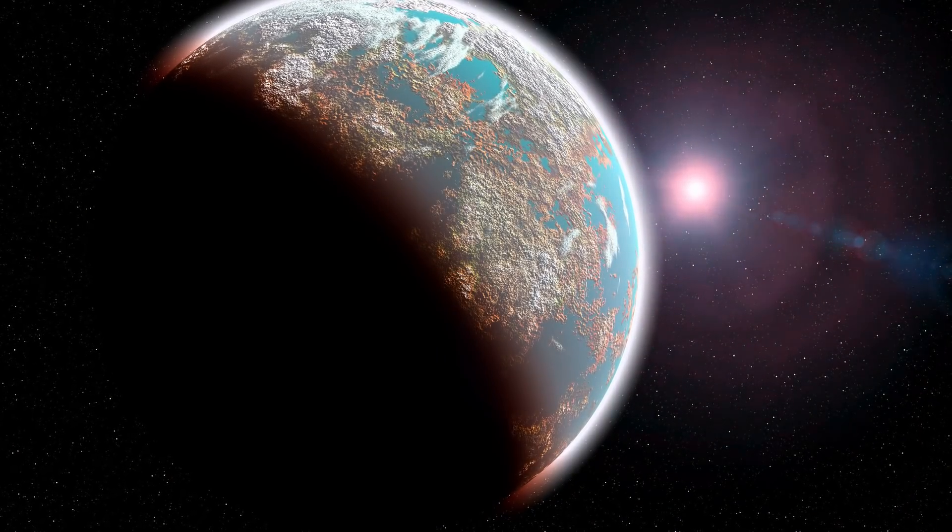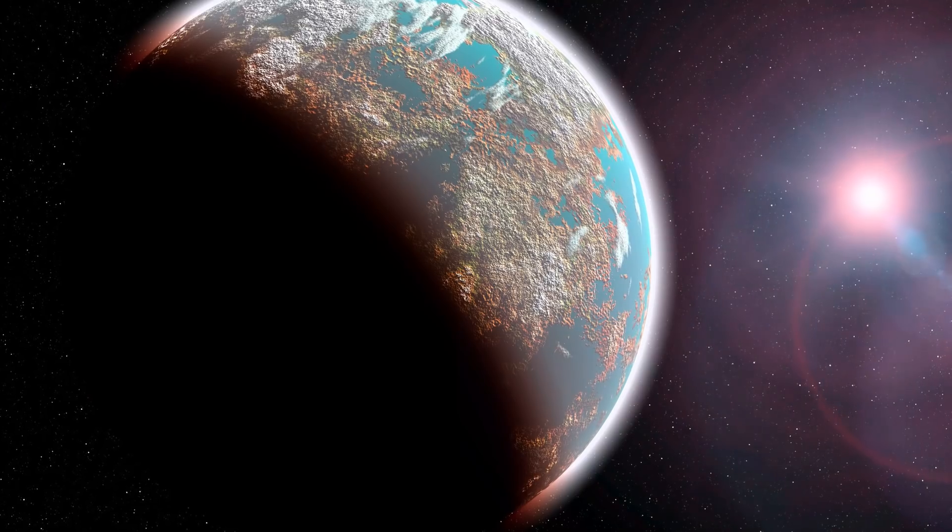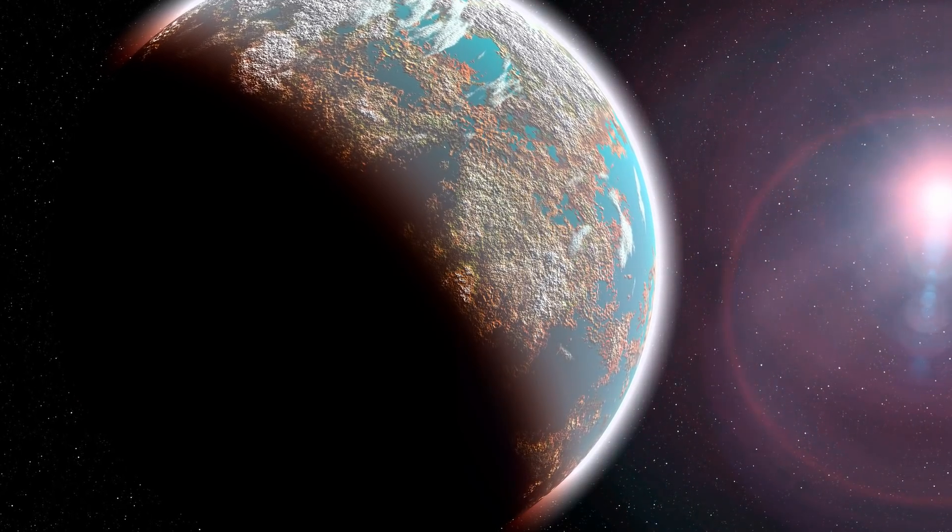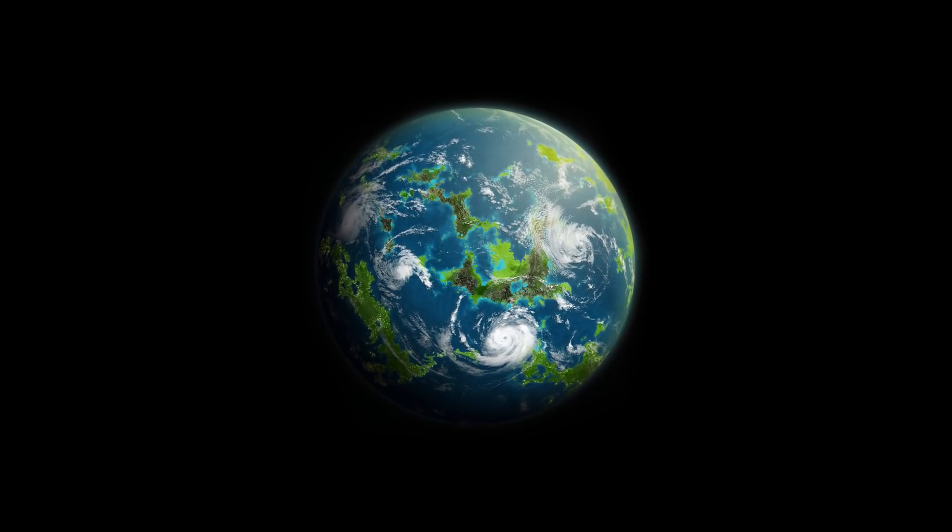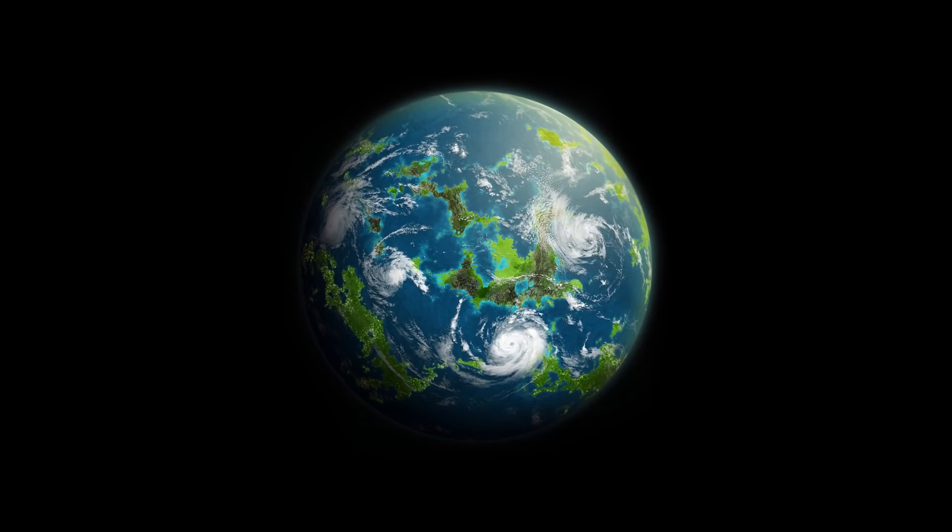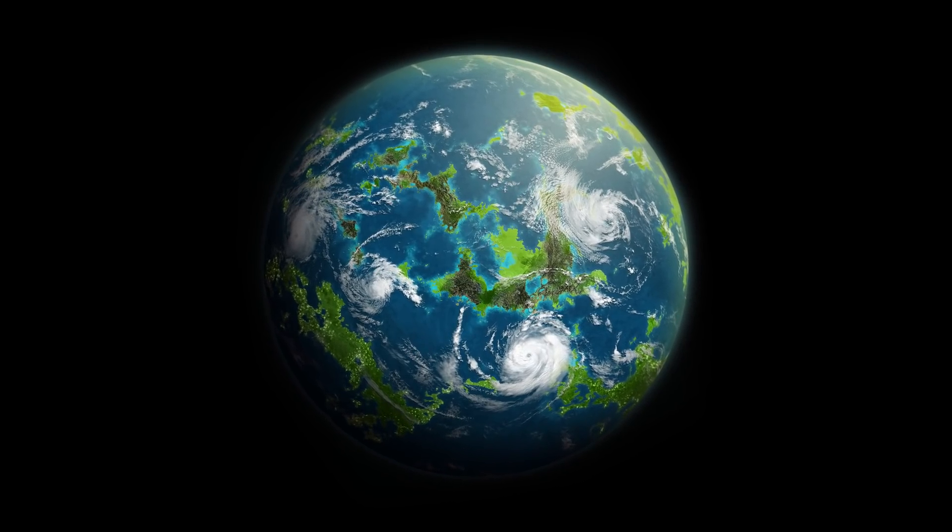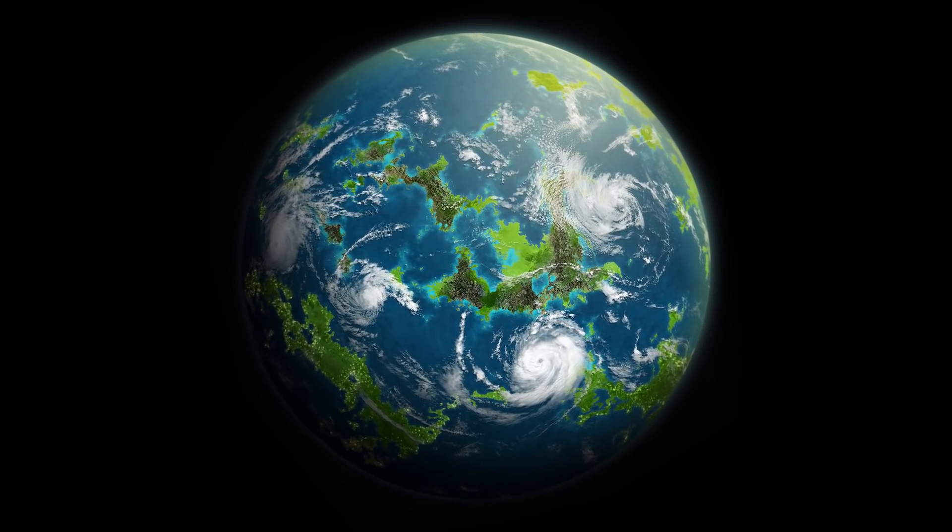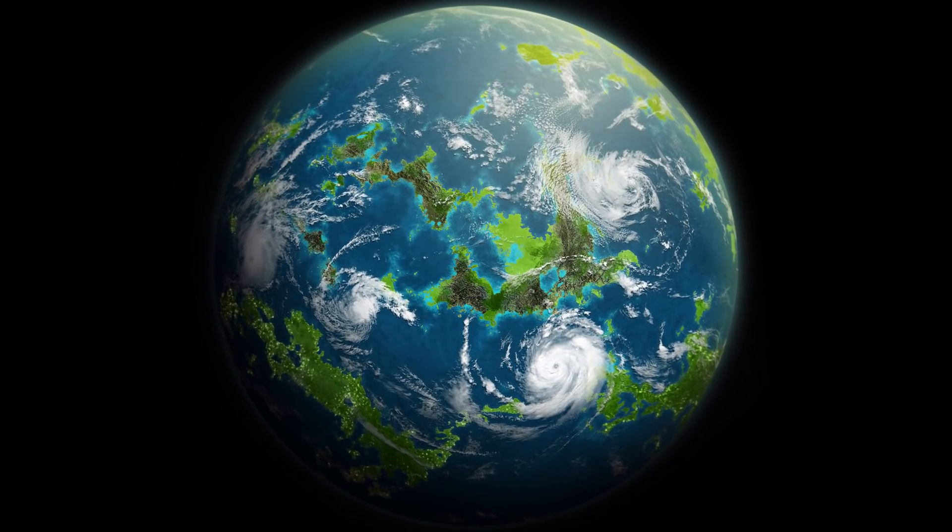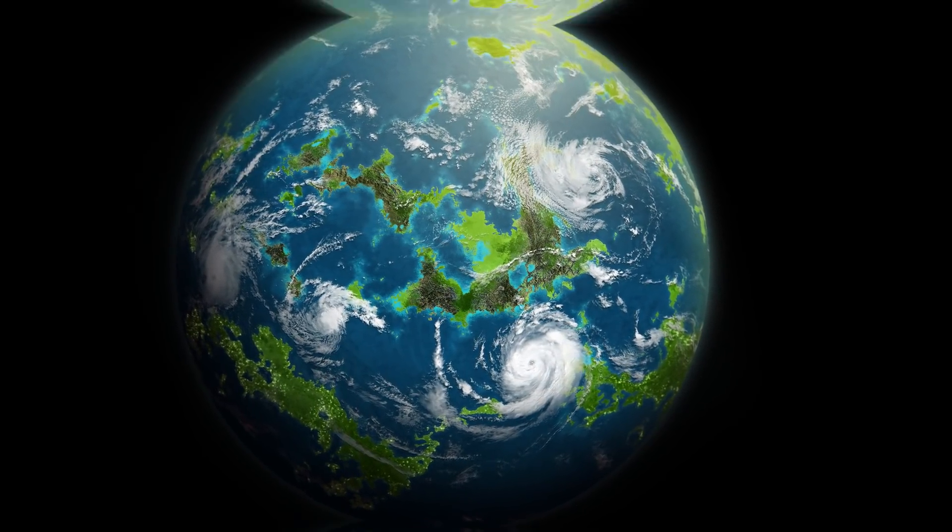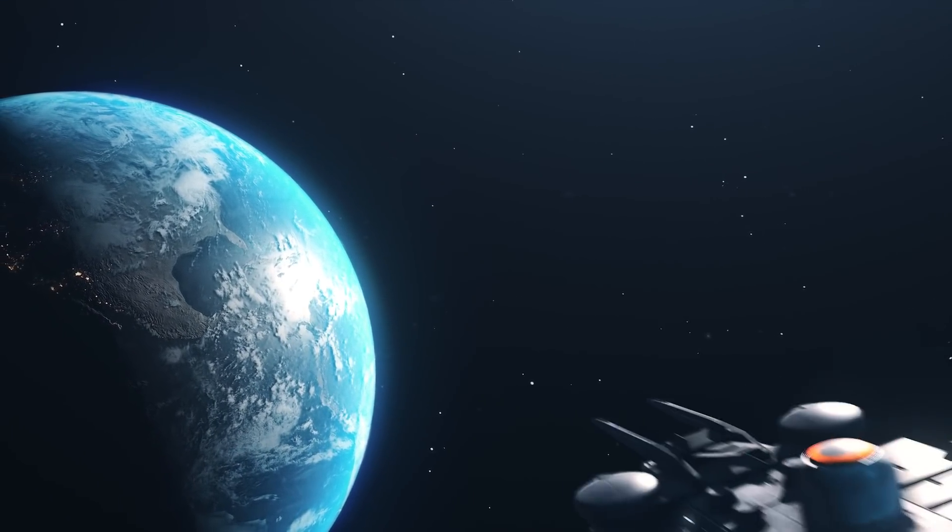Proxima Centauri b is the closest, potentially habitable exoplanet to Earth. It's believed to be a possibly Earth-like planet that orbits within the habitable zone of its star. At a speed between 15% and 20% of the speed of light, it would take between 20 and 30 years to complete the journey, and approximately 4 years for a return message from the starship to Earth. It seems for the time being the best chance to encounter alien life is for them to visit us.